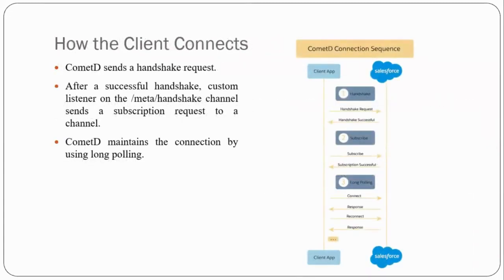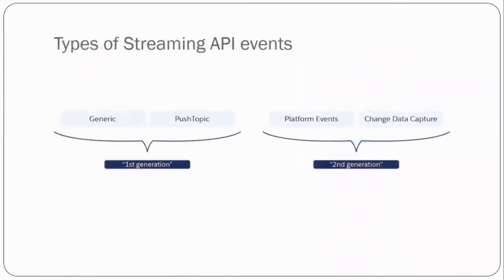Let's understand how the client connects. Whenever a client needs data from the server and subscribes to a particular channel, CometD sends a handshake request to the server. After a successful handshake, the custom listener on a meta-handshake channel sends a subscription request to the channel to get data from the server. CometD maintains the connection using long polling — whenever data is available and published, the server pushes the data and sends a response to the client. In Streaming API, we have four types of streaming events.